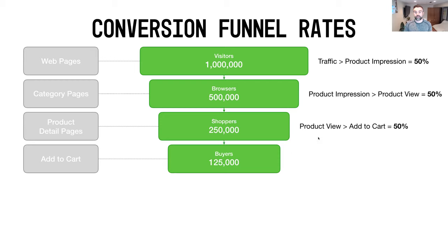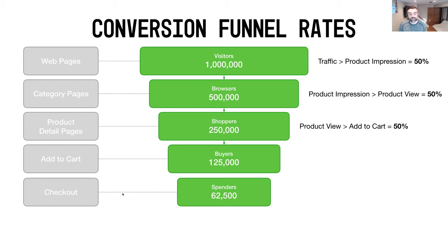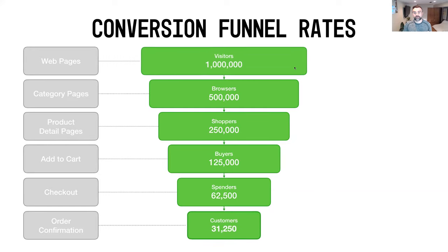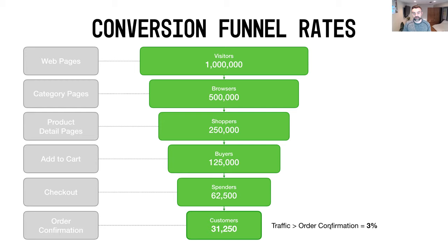Shoppers continue by adding things to carts and becoming buyers — serious about purchasing — and that conversion rate is your product-view-to-add-to-cart percentage. Buyers who've added to cart are at the last step: getting through checkout. We call those people spenders, and that rate is your add-to-cart-to-checkout percentage. Finally, spenders who reach order confirmation become customers — that's your checkout-to-order-confirmation step. When you do the math with 50/50/50/50 across each step, you get a 3% traffic-to-order-confirmation rate, meaning 97% of people fall off along the way.